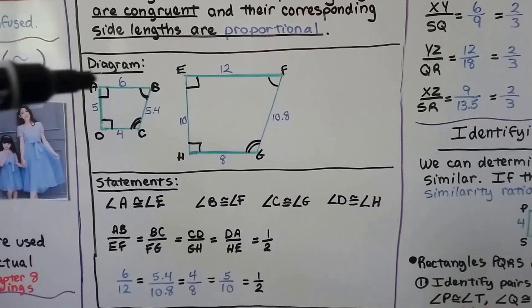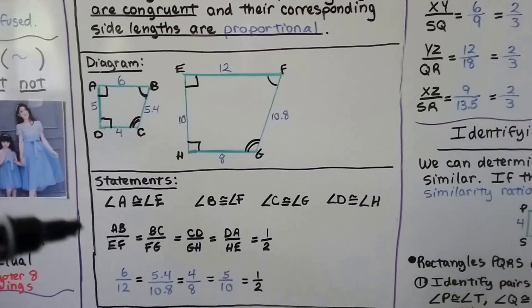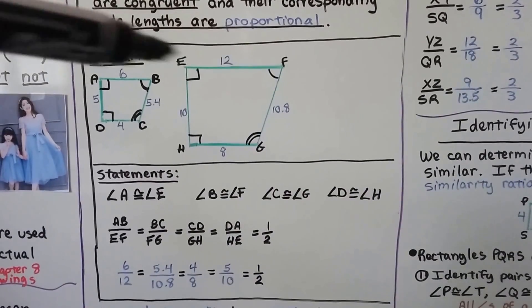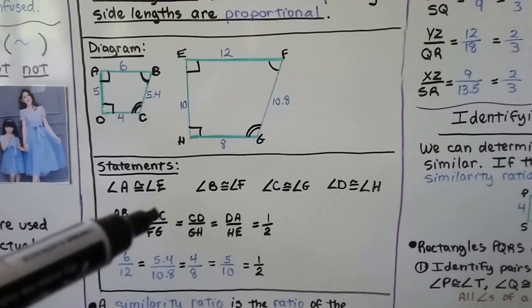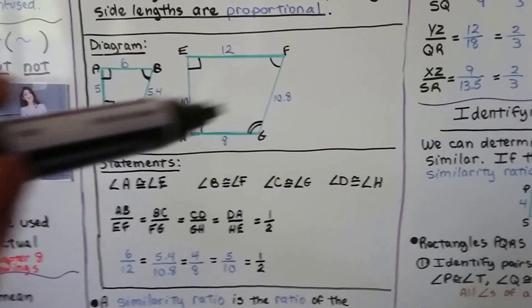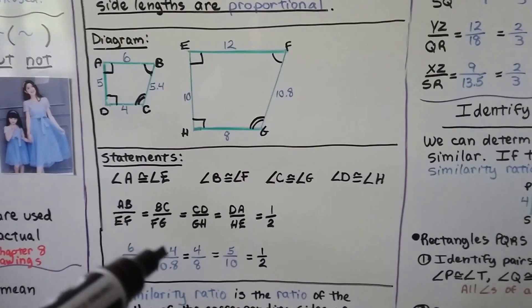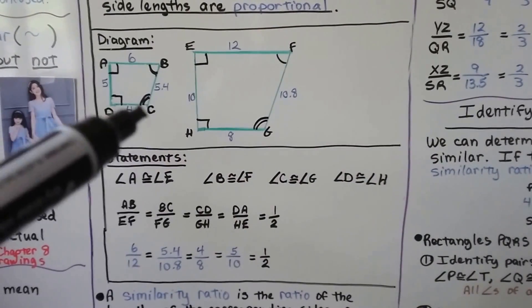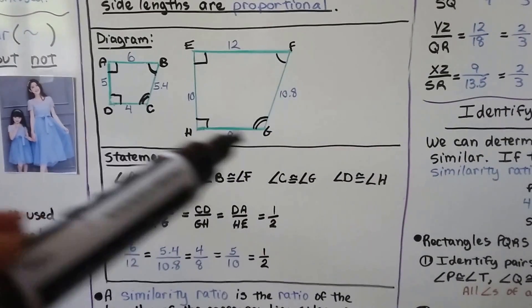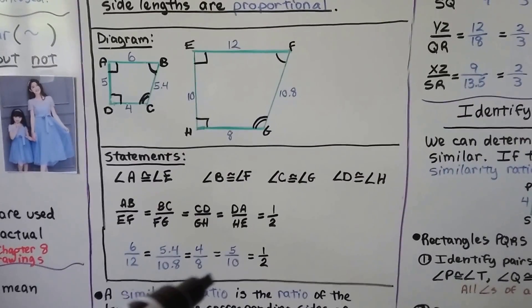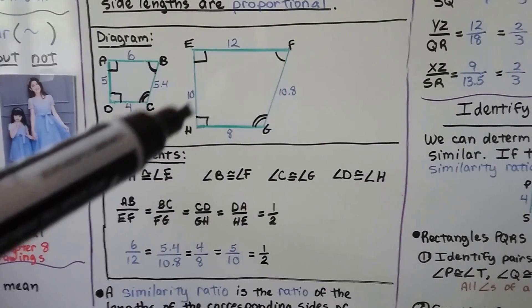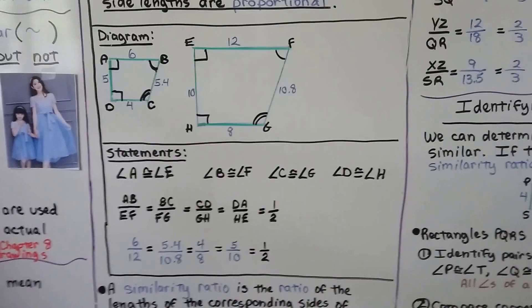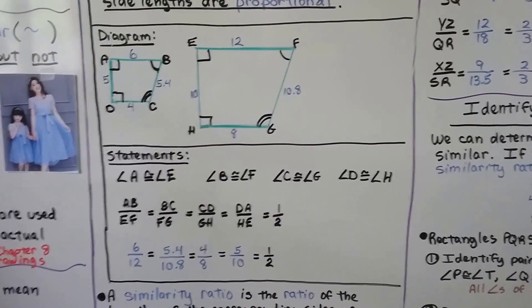AB, this length that's a 6, over EF, the corresponding length, would be 6 over 12. BC corresponds to FG, so 5.4 over 10.8. CD, this one that's a 4, corresponds to GH, that's an 8, so 4 over 8. And DA is 5, corresponds to HE that's 10, so 5 tenths. Every single one of them, when simplified, is a half.